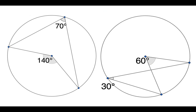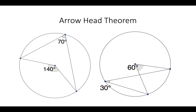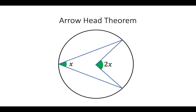Now we've got an angle in the centre of a circle and an angle on the outside. What do you notice about these two angles? Yes, they are double — the one on the inside is double the one on the outside. This is called the arrowhead theorem because sometimes it looks something like an arrowhead. If the angle on the outside is x, then the angle inside is double that: 2x.